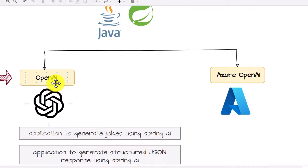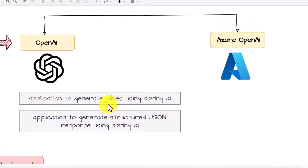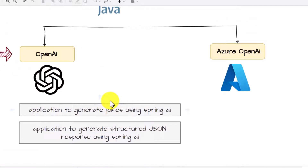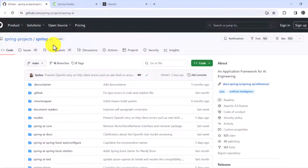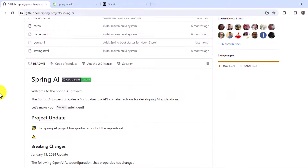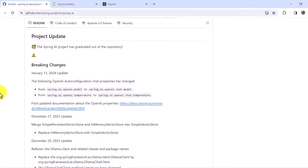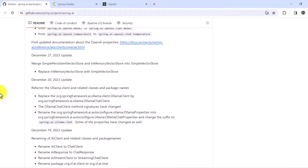In this video we are going to create an application using Spring AI, and internally it's going to use OpenAI so that we can use the generative AI models offered from OpenAI. We are going to create two kinds of applications: one to generate tokens based on a given topic, and another to structure the output in JSON format. Note that Spring AI is still in experimental phase, so we refer dependencies from its repo only.